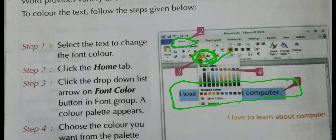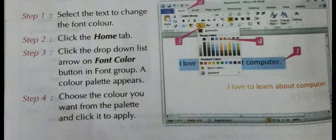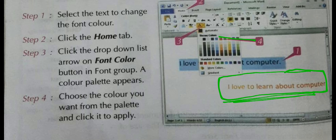If you are in the Home tab, select the text first, then click the Font Color drop-down arrow and different kinds of colors will appear. Choose whichever color looks good and click on it. Here, orange was selected for the text 'I love to learn about computer' and the color appeared on the screen.